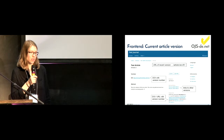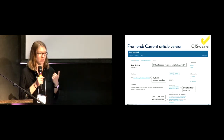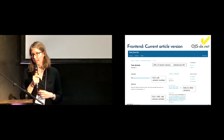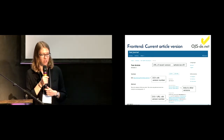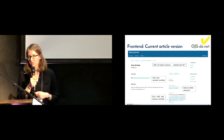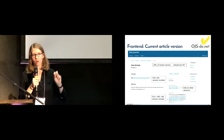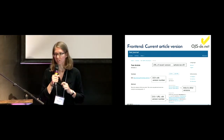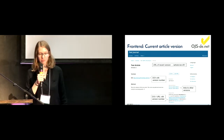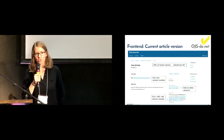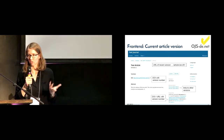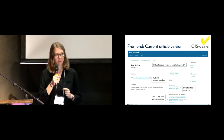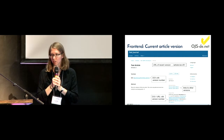At the front end, this is the article page as you know it, but there are some changes. The version history is displayed so you can view the old versions. Each version is displayed on its own article page. The DOIs contain the version number so researchers are citing the correct version. The how-to-cite block has also been updated with a URL containing the version number.